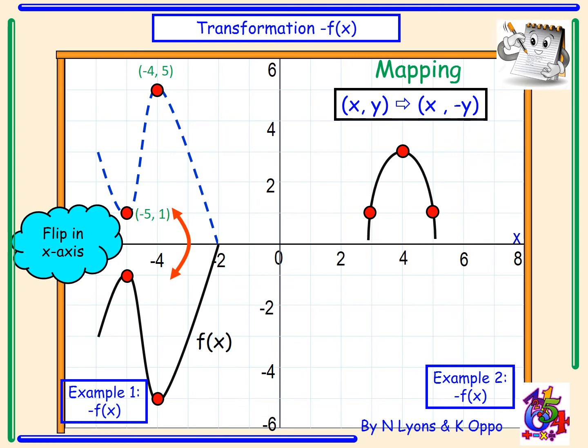If we look at example 2 to find the graph of negative f(x) again we're going to flip over our x-axis. Flipping over the x-axis our new coordinates are (3, -1), (4, -3) and (5, -1). So again each of the y coordinates have been multiplied by negative 1.